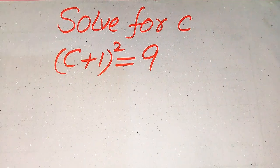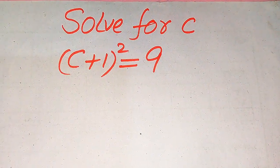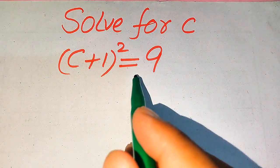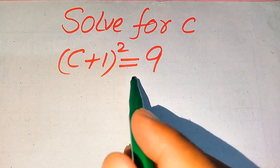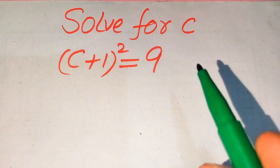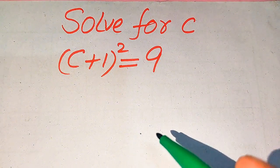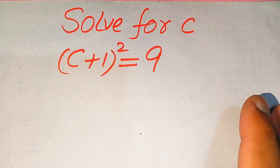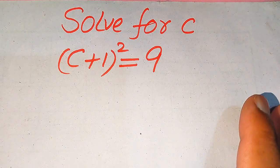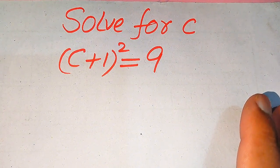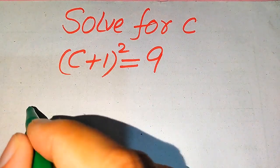Hello everyone. How to solve this problem for the values of c if we have (c + 1)² = 9, and we solve this problem for all the values of c. Here, first we find all the roots of this equation, and at the last we will verify which of the roots are solutions of this equation and which of the roots are extraneous roots. At the end I will explain the term extraneous root and solution.